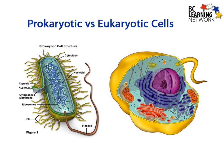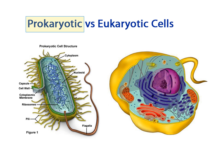Welcome to Unit 3 on cell structure and function. We are going to start off defining a few simple terms here. First of all, cells are divided into two categories: the prokaryotic cells and the eukaryotic cells.